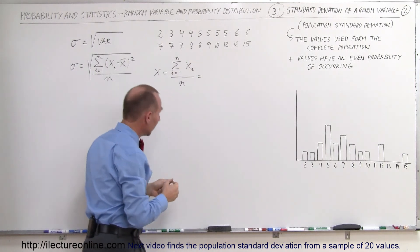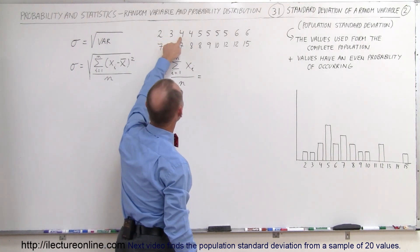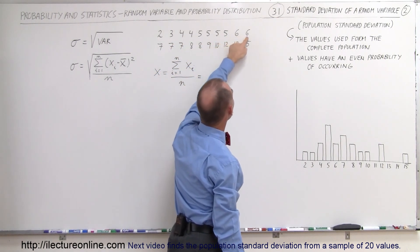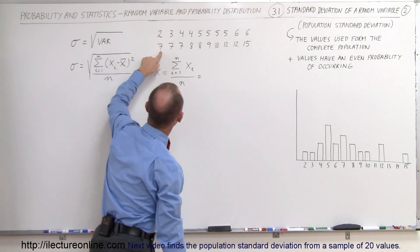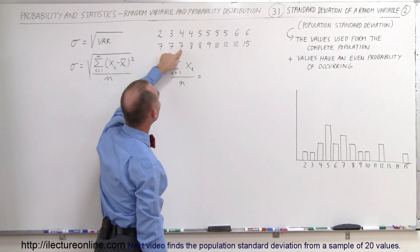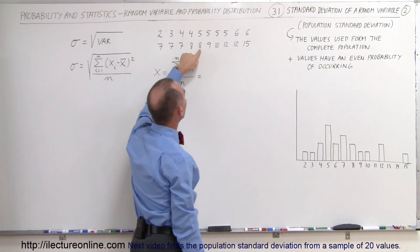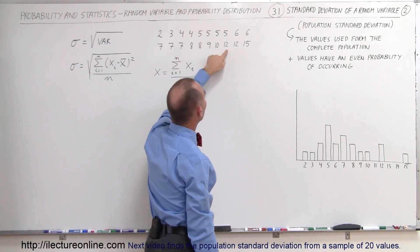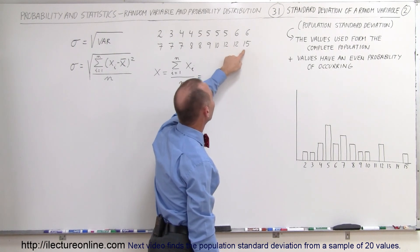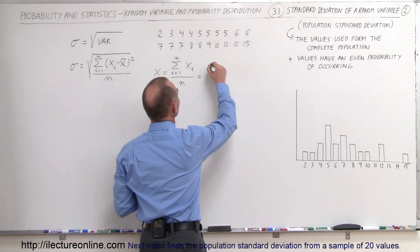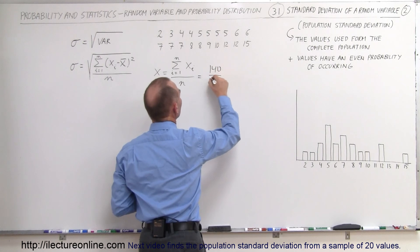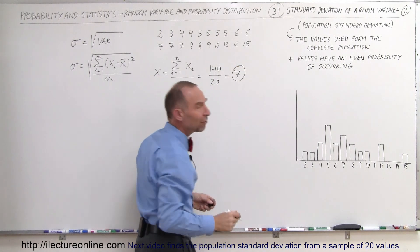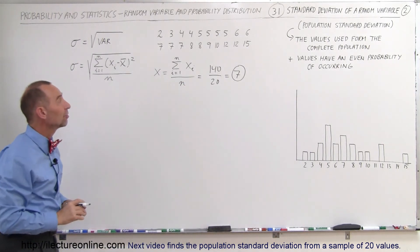So we sum all the numbers up: 5, 9, 13, plus 20 is 33, 39, 45, 45, 52, 59, 66, 74, 82, 91, 101, plus 4 is 105, 115, 125, 140. Since there are 20 numbers, we divide by 20, and the average value is 7. That's the average of those 20 values.